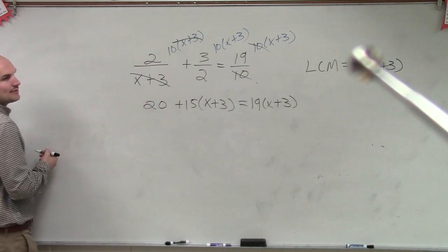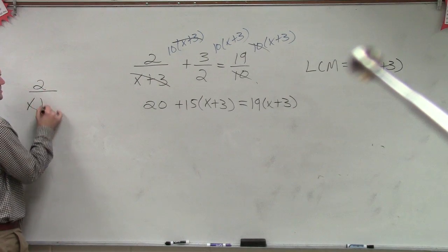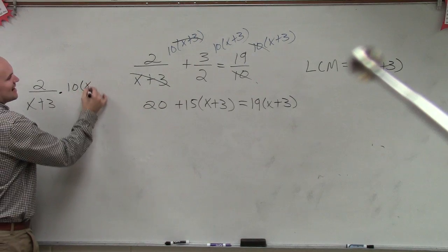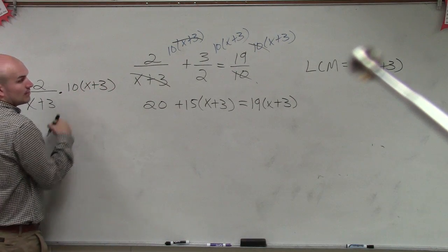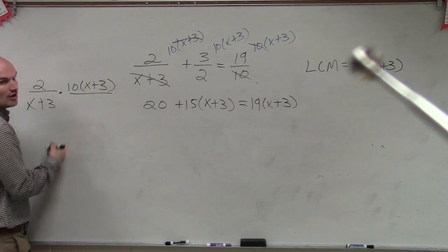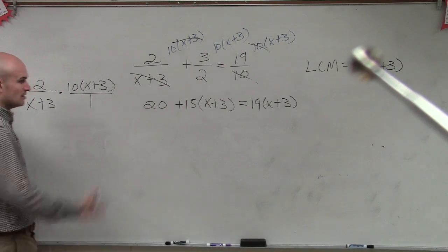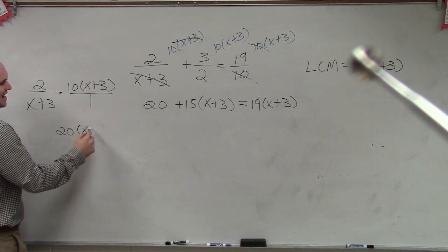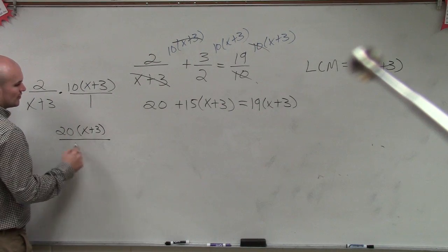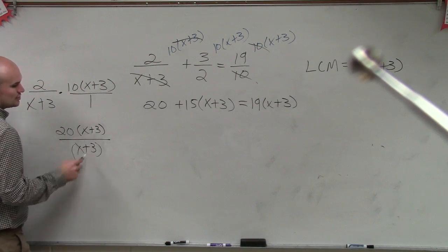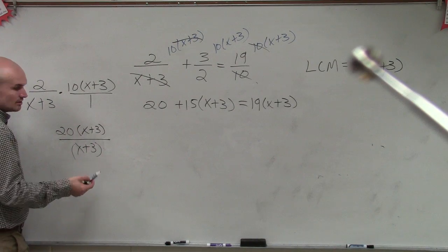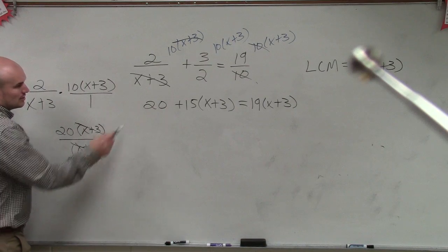OK. So let's go back through this. If I'm multiplying 2 over x plus 3 times 10 times x plus 3, right? Remember how we multiplied whole numbers? We can change that to a fraction. So now we're multiplying these across, which would be 20 times x plus 3 over x plus 3. Do you notice how x plus 3 divide to equal 1? Because they're the same thing. Right?